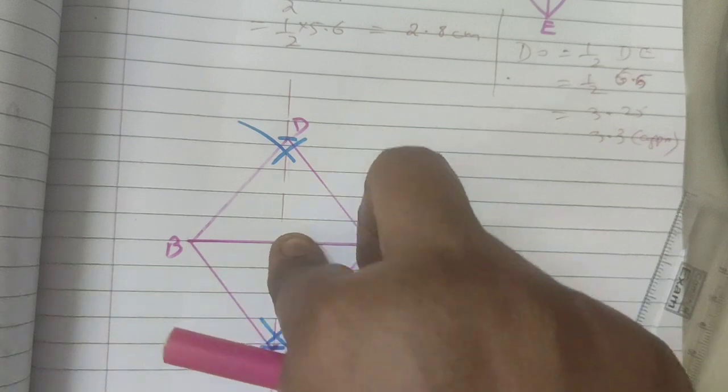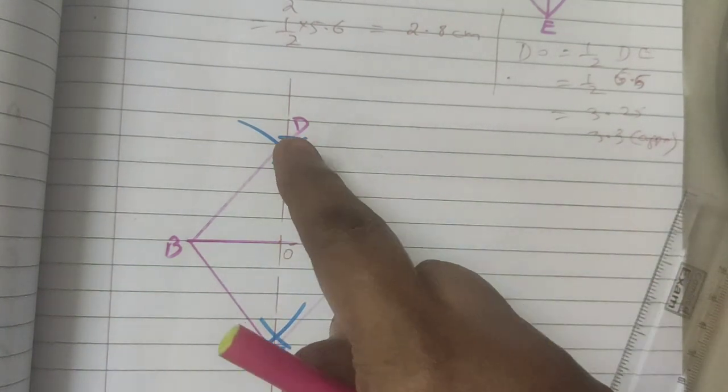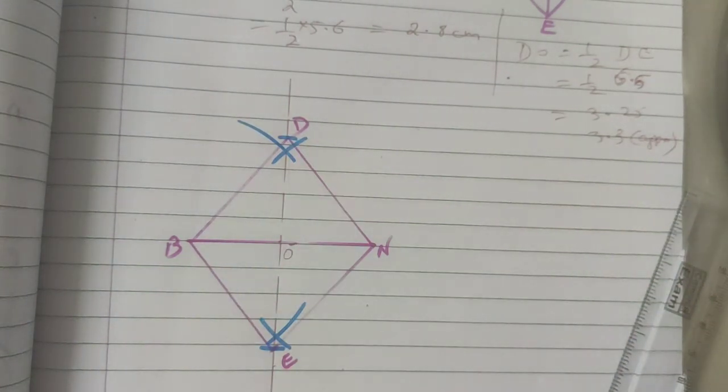Mark on both the sides. So that you will get the rhombus shape. Thank you.